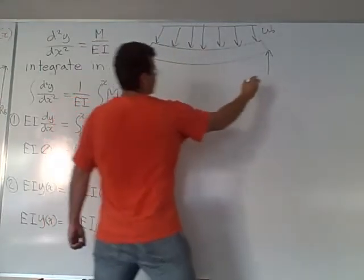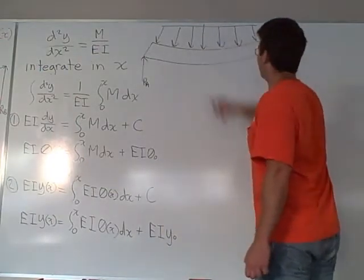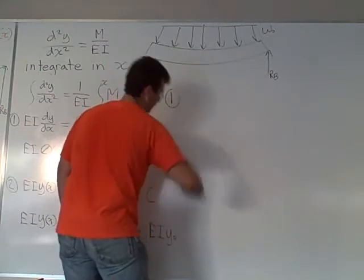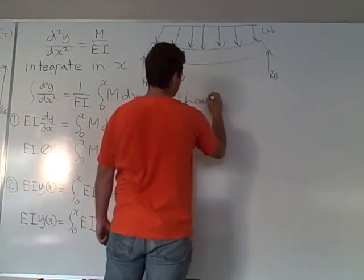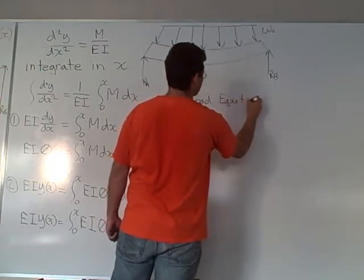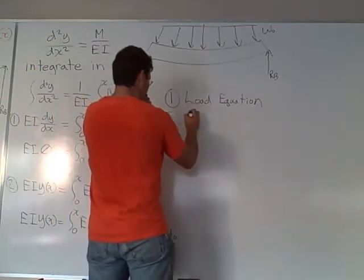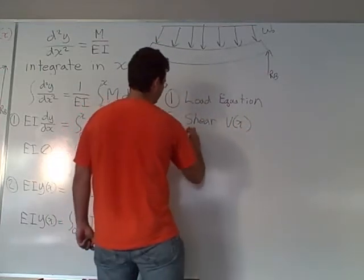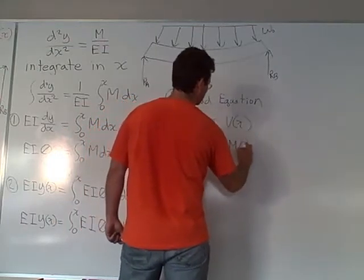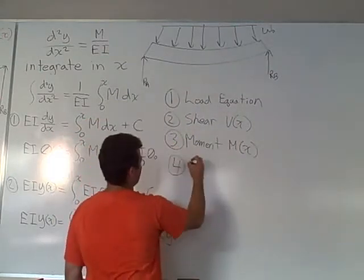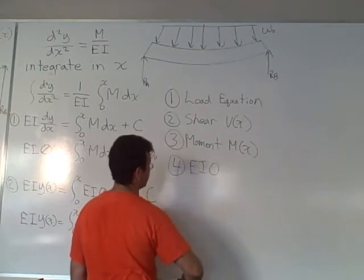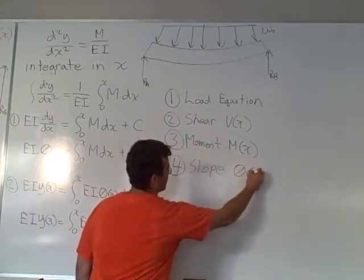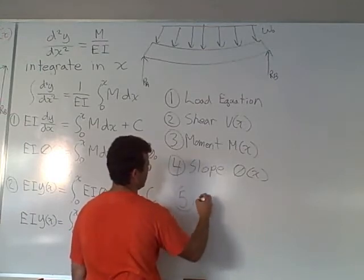We have our reaction at A, our reaction at B, we have our load. So the first thing that we have to determine is our shear. Or I like to start with the load, our load equation. And then the second is to determine our shear. And then we determine our moment. And once we have our moment, we can determine our angle - let me call it our slope. And once we have our slope, we can determine our elastic curve.